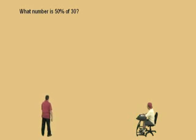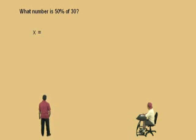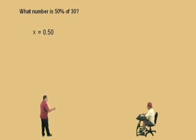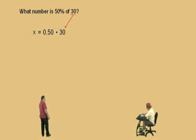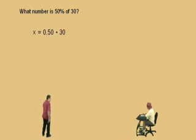Watch. What number? That's our x. Is — remember, 'is' means equal. 50%. Remember, Charlie, 50% is a word statement, so it has to be translated into a mathematical statement, which means we're going to write it as a decimal or a fraction. In this case, we're going to write it as a decimal. So notice 50% turns into 0.50. 'Of' means multiplication. 30. So there it is. What number is 50% of 30? There's your equation.